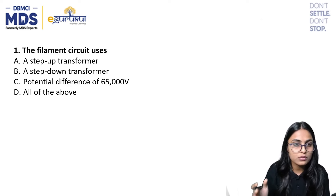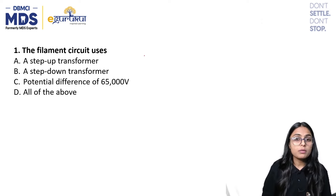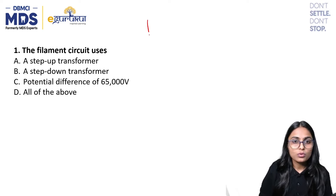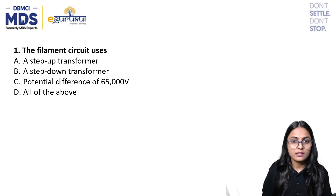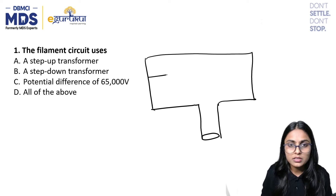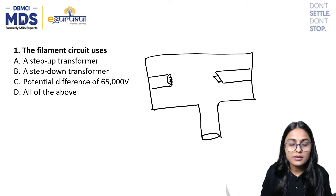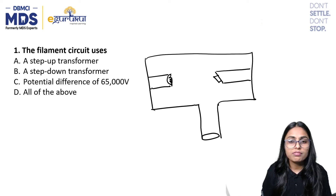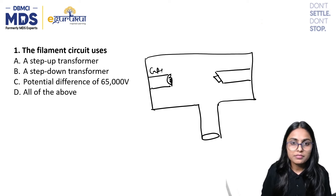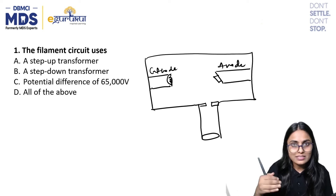Option C: potential difference of 65,000 volts, Option D: all of the above. Now when we talk about an X-ray tube, we have the cathode at one end with the filament, and the anode with the copper stem and tungsten target. When we studied the structure of the X-ray tube, we have the cathode, the anode, and the X-ray tube window from where X-ray photons come out.